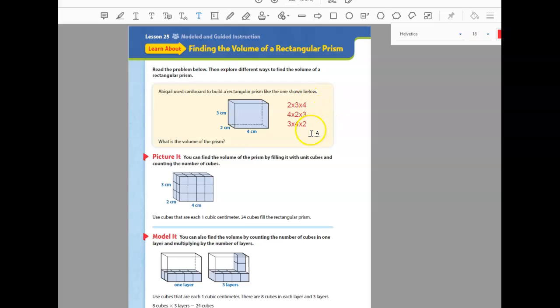So all of those are going to equal 24. What we need to think about is that would be putting 24 one-by-one-by-one cubes inside. We can look at this first layer and see there's four on the front, so there has to be four on the back. So each layer is eight, and eight times three is 24. Each one of these cubes is a one-by-one-by-one.